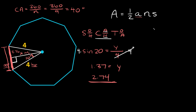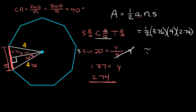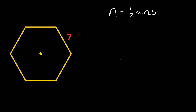To find the area, we plug everything in: total area equals one half times the apothem 3.76, times the number of sides 9, times the side length 2.74. Plugging that into the calculator gives a total area of approximately 46.3 units squared.